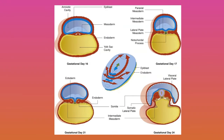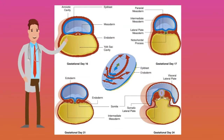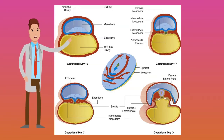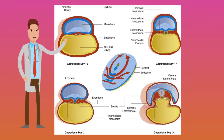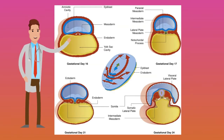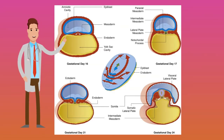At day 16, a small embryonal disc can be recognized. This is formed of two cell layers: the epiblast and the hypoblast. The epiblast will form the future ectoderm, and the hypoblast will form the endoderm. These are sandwiched between two cavities: the amniotic cavity and the yolk sac.